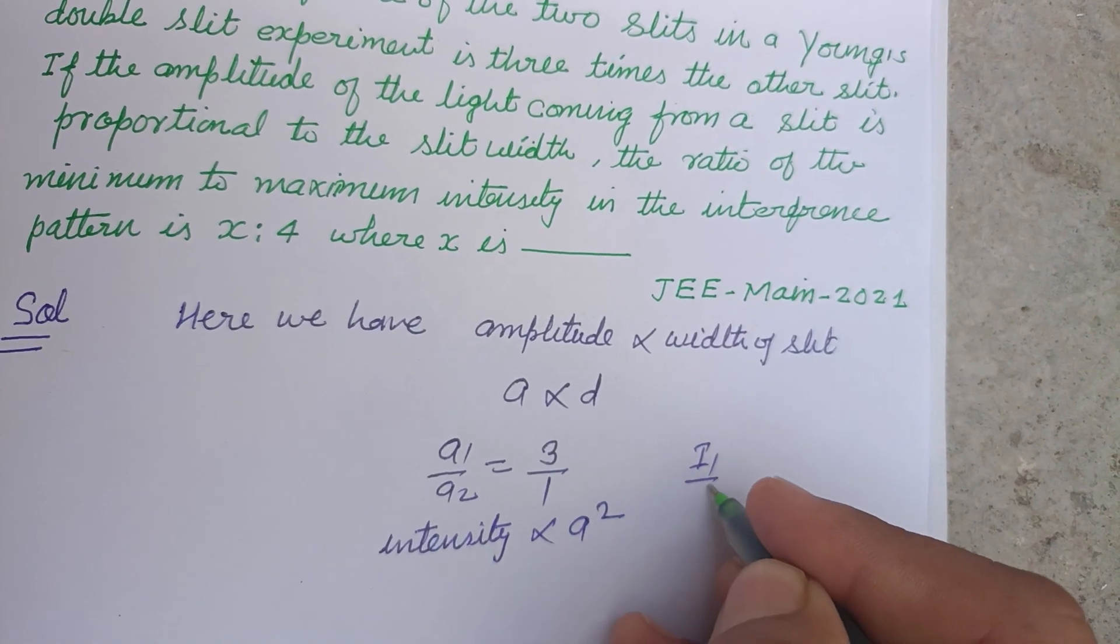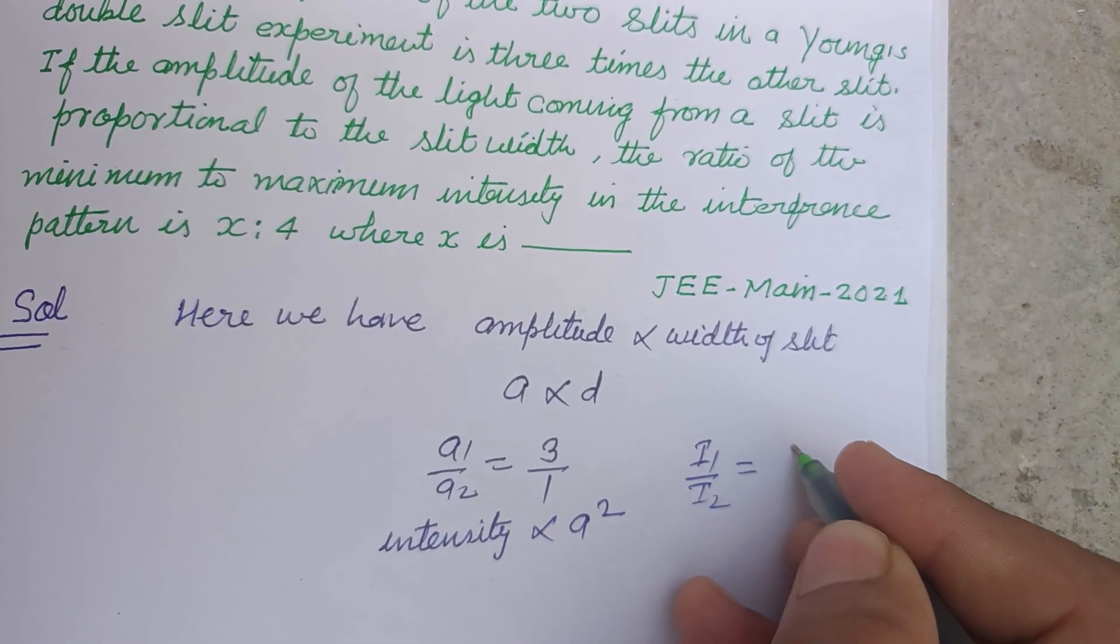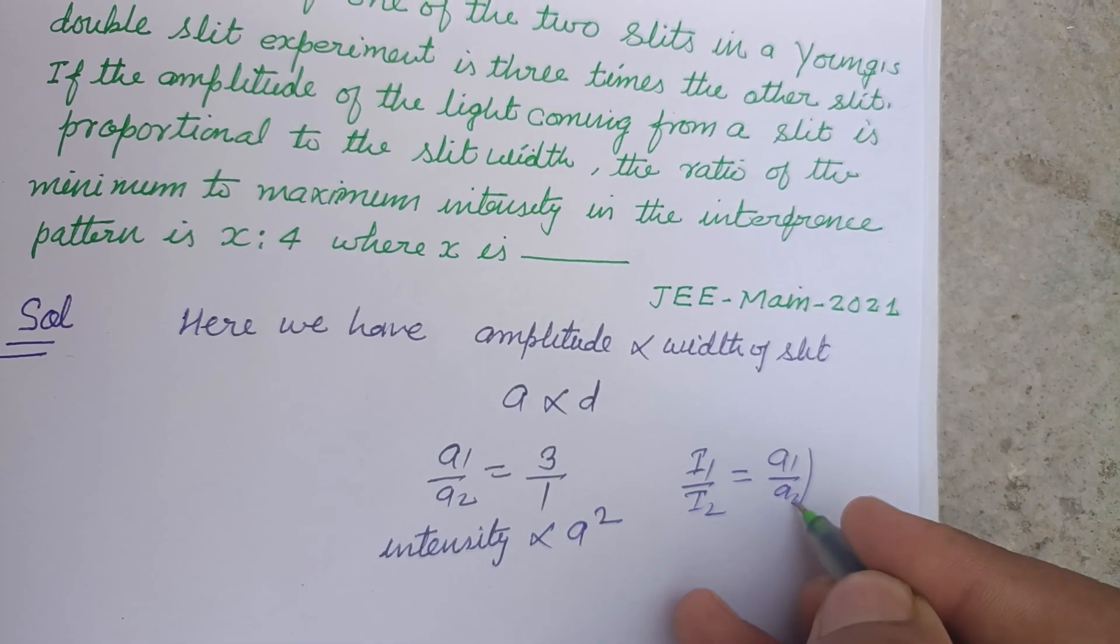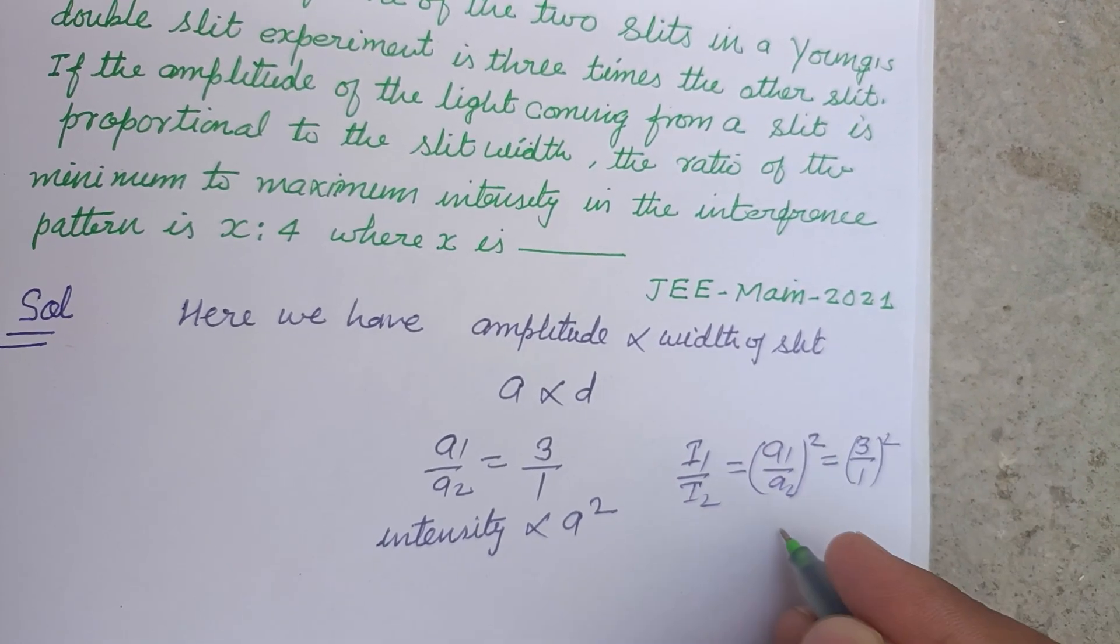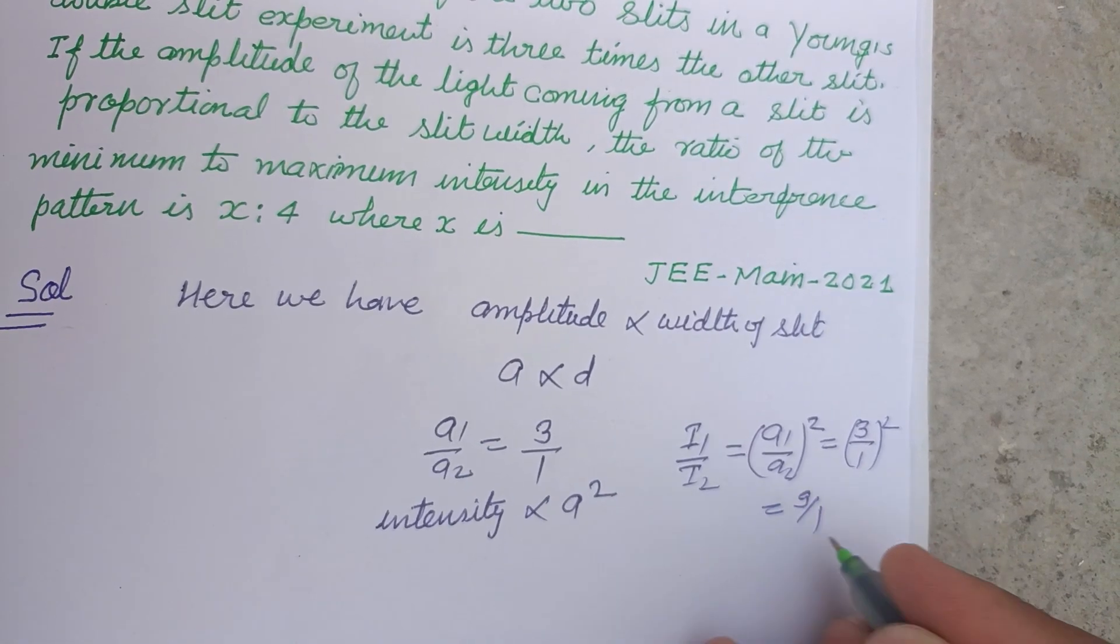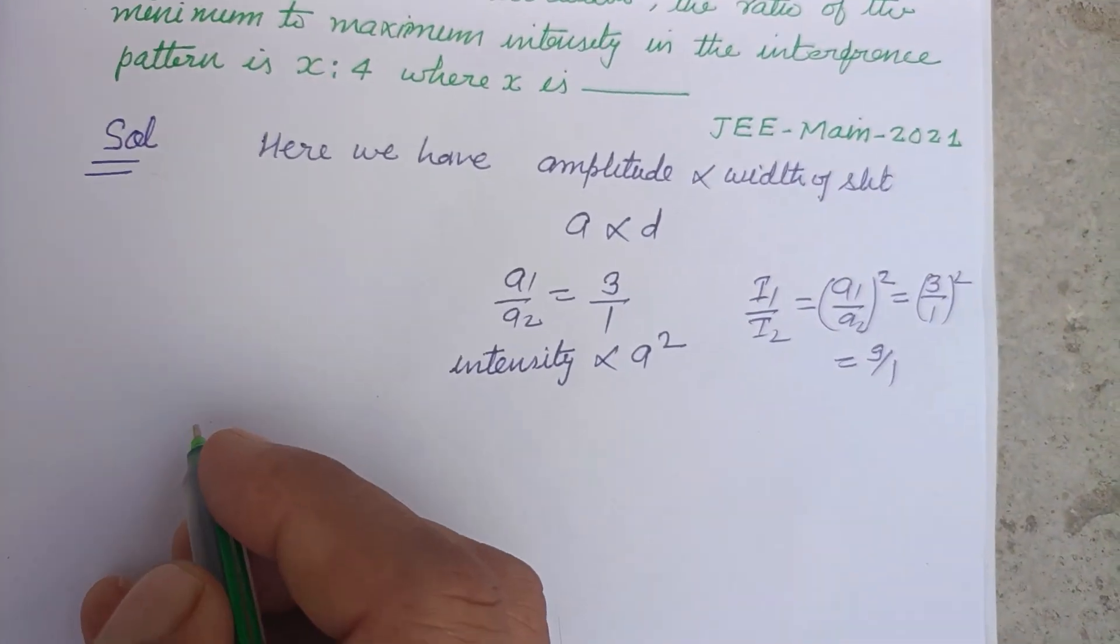Therefore, I1 upon I2 is equal to A1 upon A2 whole square. So this is 3 over 1 whole square, which is 9 over 1.